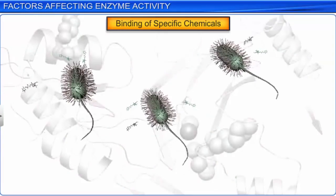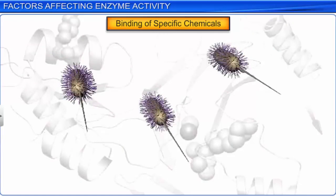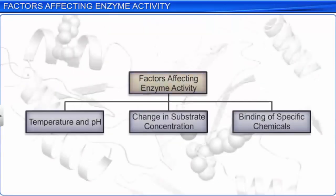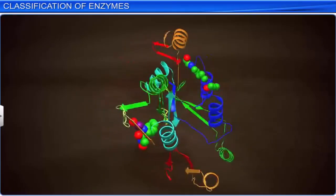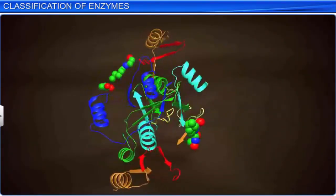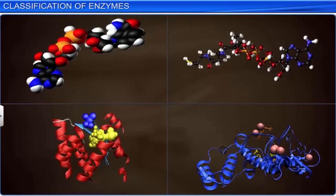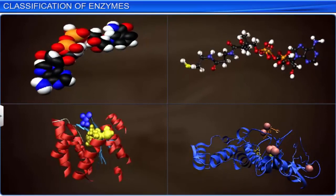Thus, enzyme activity depends on physical factors such as temperature and pH and the chemical surroundings such as substrate concentration and the binding of specific chemicals. Enzymes play a significant role by helping the various processes in a biological cell to take place at a significant rate.